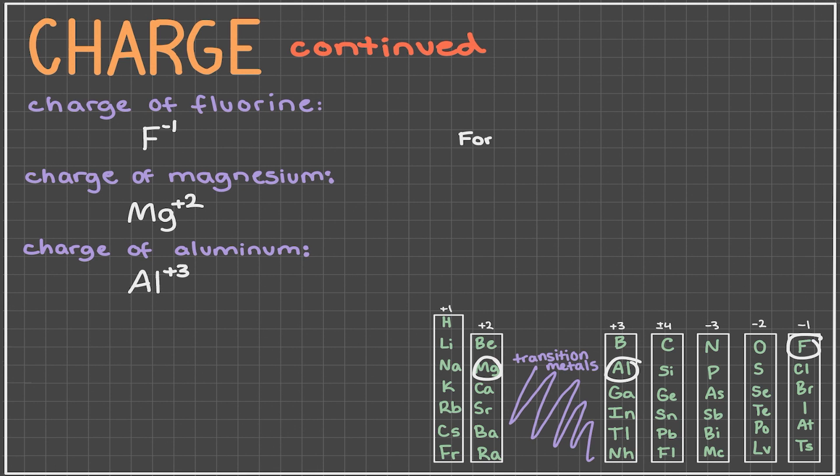As mentioned before, we can't tell the charges of transition metals by simply glancing at the periodic table. However, if we are given a transition metal with Roman numerals written in parentheses, those numerals will represent the charge. For instance, if we are given copper and the Roman numerals for 2 in parentheses next to copper, we know that in this example, copper has a plus 2 charge.